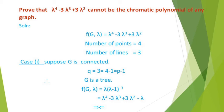Next, we find the number of lines from the coefficient of the next highest degree term. The next highest degree is lambda^3, with coefficient minus 3; the positive coefficient value is 3. So the number of lines is 3. Therefore, for this chromatic polynomial, the graph must contain 4 points and 3 lines.